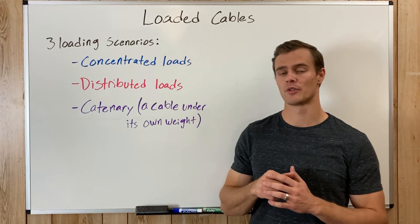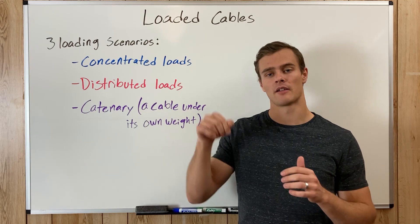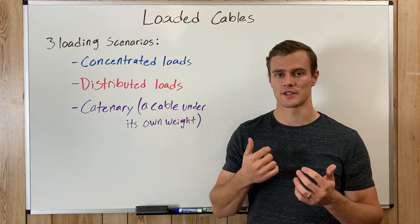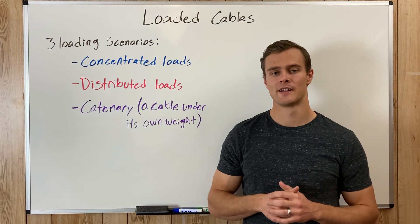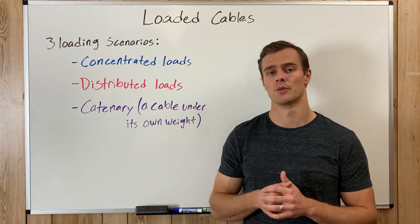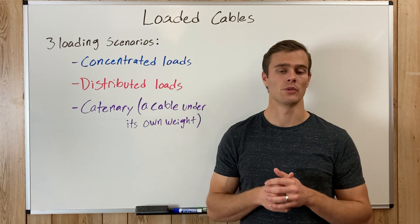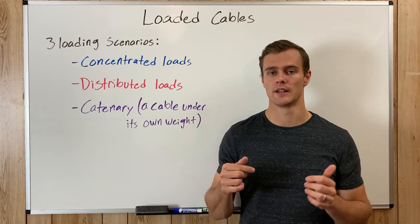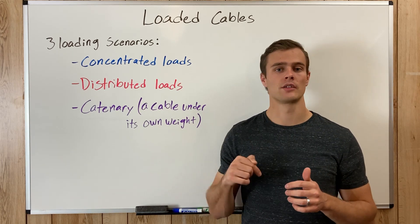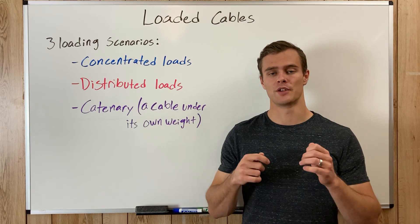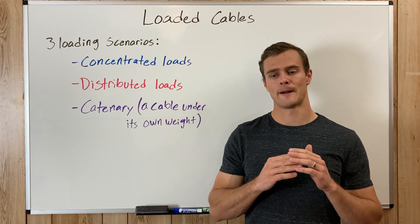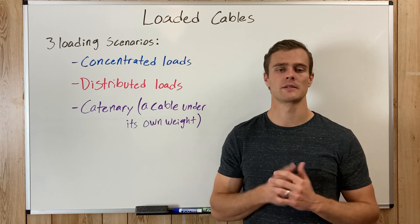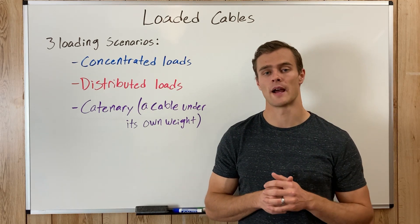A concentrated load is a load on a cable that is pulling down at individual points — that might be a rope or cable tied to those points, or just something else hanging off of it, like on a hook. The way we analyze those is through the method of sections and the method of joints using equilibrium equations. We can do that because those little sections stretched between loading points or reaction points are considered relatively straight, even though they curve a little bit, and we approximate them as straight.